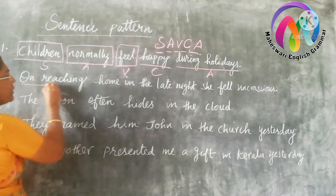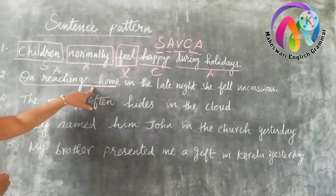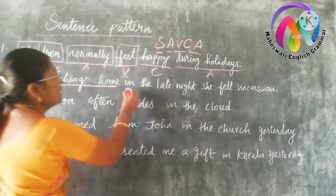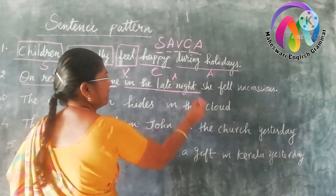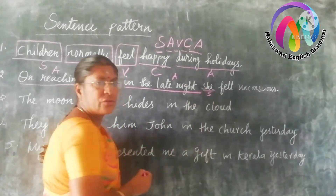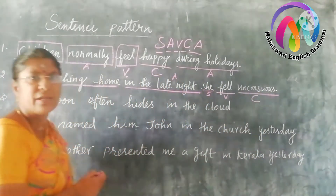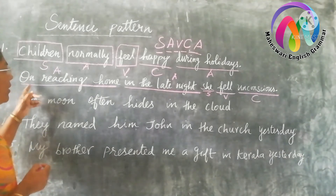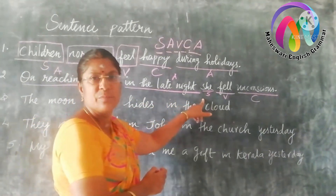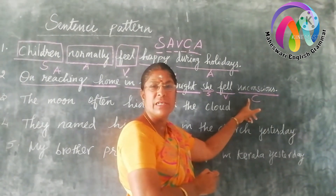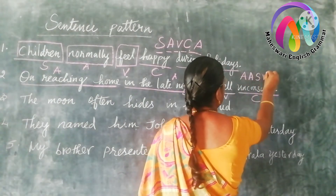Let us see this again. 'On reaching home' is an adverbial — home is a place, so it asks the question 'where.' 'In the last night' asks the question 'when,' so it is also an adverbial. 'She' is the subject, doing the action. 'Feel' is the verb. 'Unconscious' is the complement. So the sentence pattern is A A S V C.